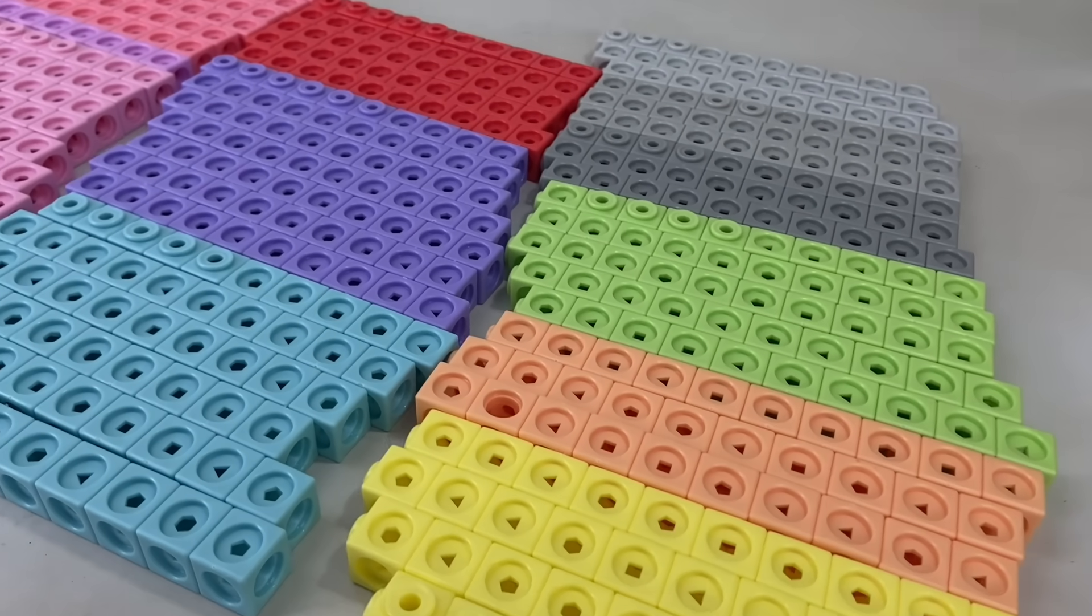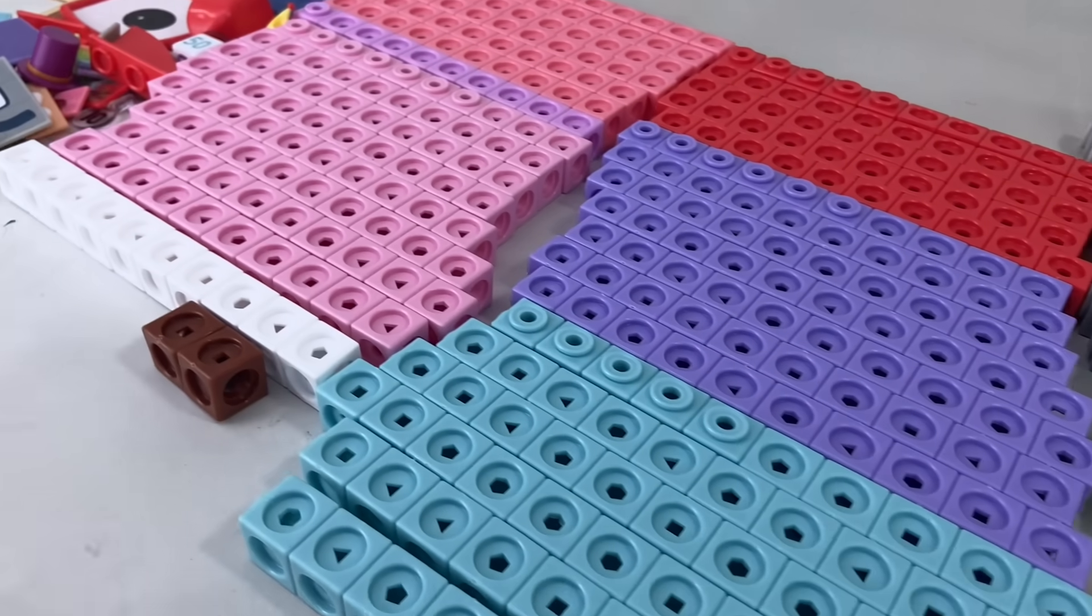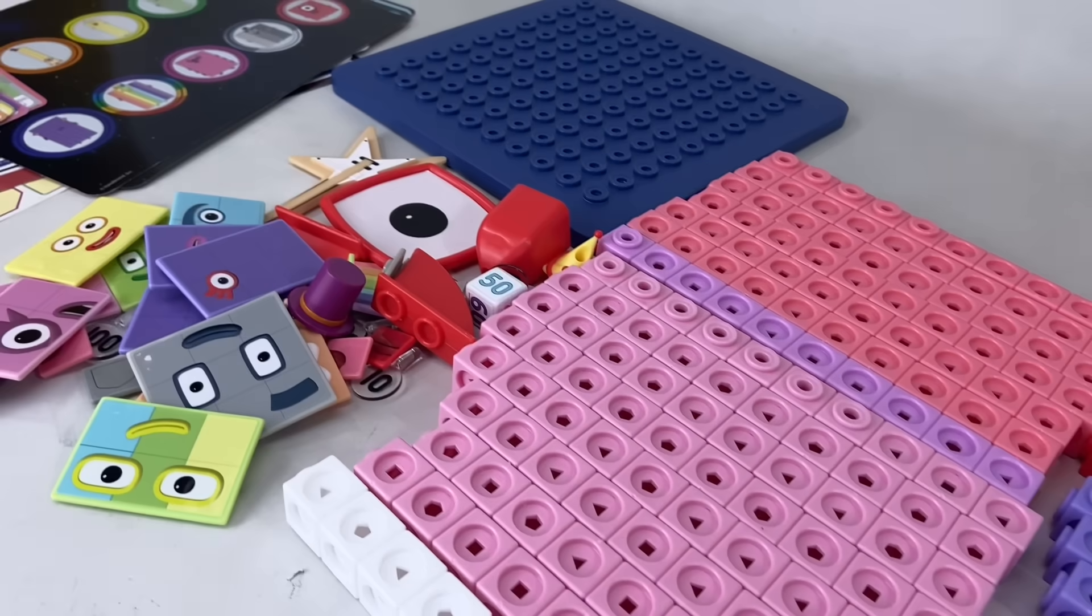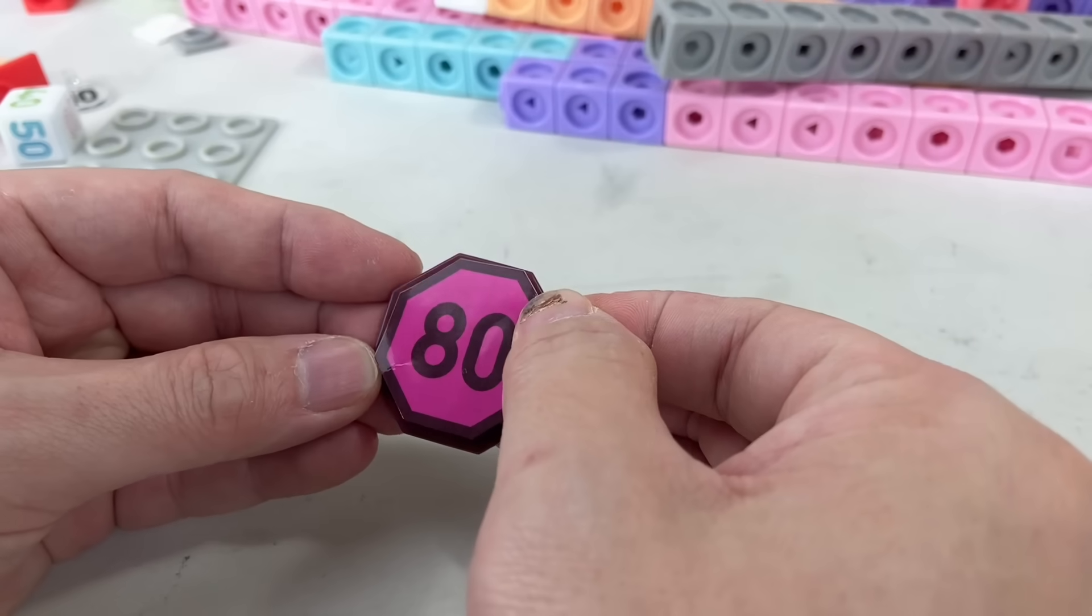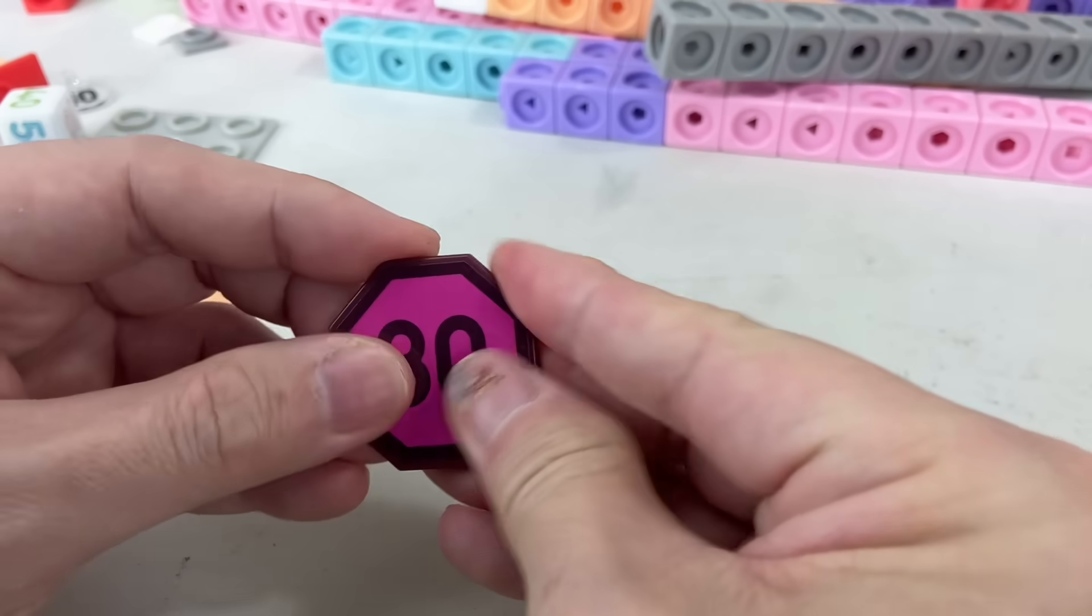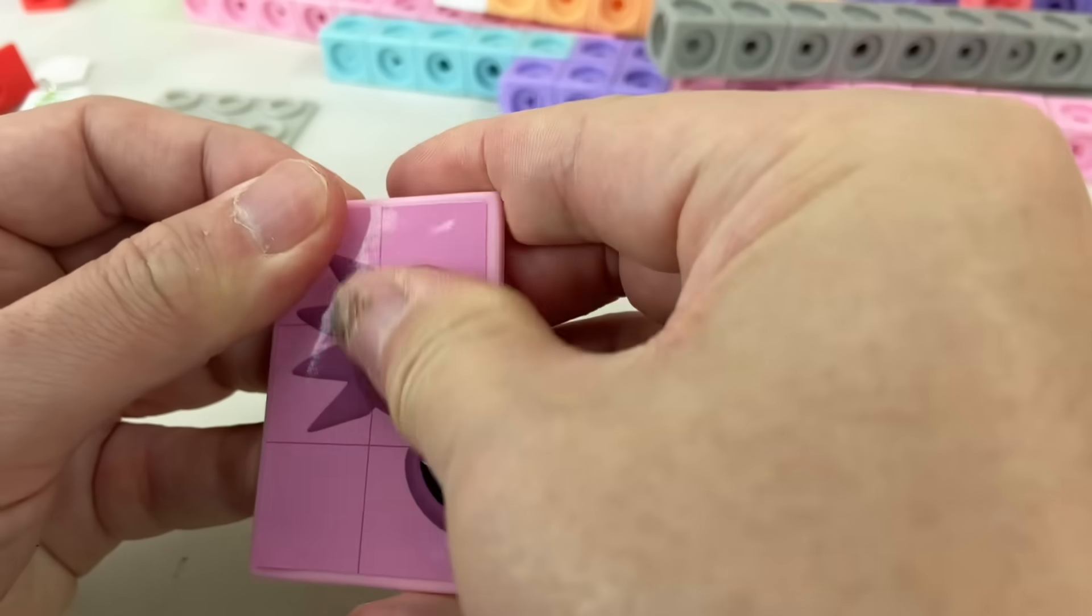Look at all the Math Link cubes it comes with! This set comes with over 550 cubes, special connectors, and lots of character accessories. It also comes with a bunch of stickers for the faceplates.